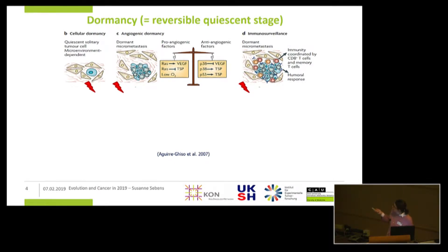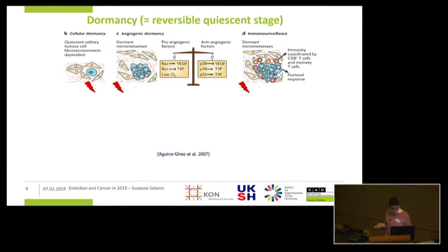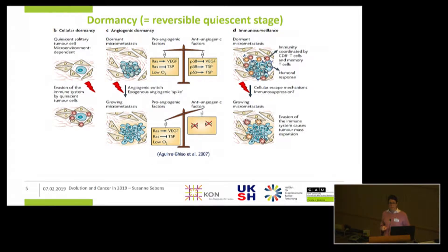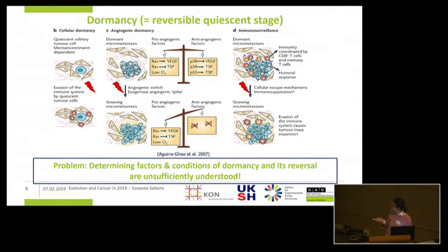Dormancy can also affect a tumor mass in which we have a balance between slowly proliferating cells and dying cells. This balance can be achieved by the presence of a limited number of blood vessels and thereby limited access to nutrients, growth factors, or oxygen — or by the presence of immune cells that detect and eliminate highly immunogenic tumor cells while sparing the poorly immunogenic ones. We have ample evidence that acquisition of further epigenetic or genetic alterations, or alterations of the microenvironment, will lead to a reawakening of this quiescent stage.